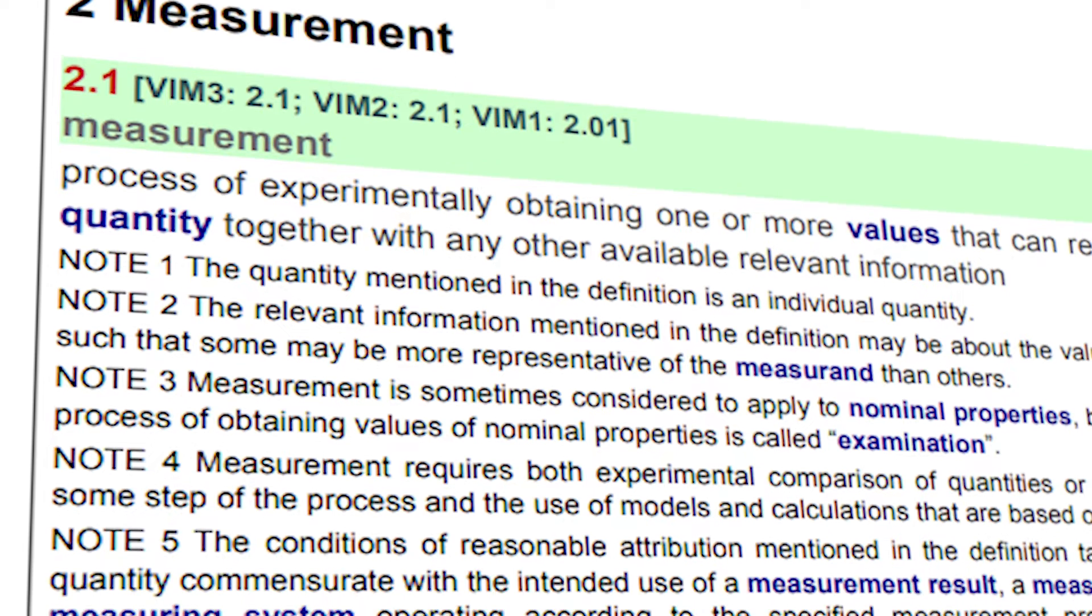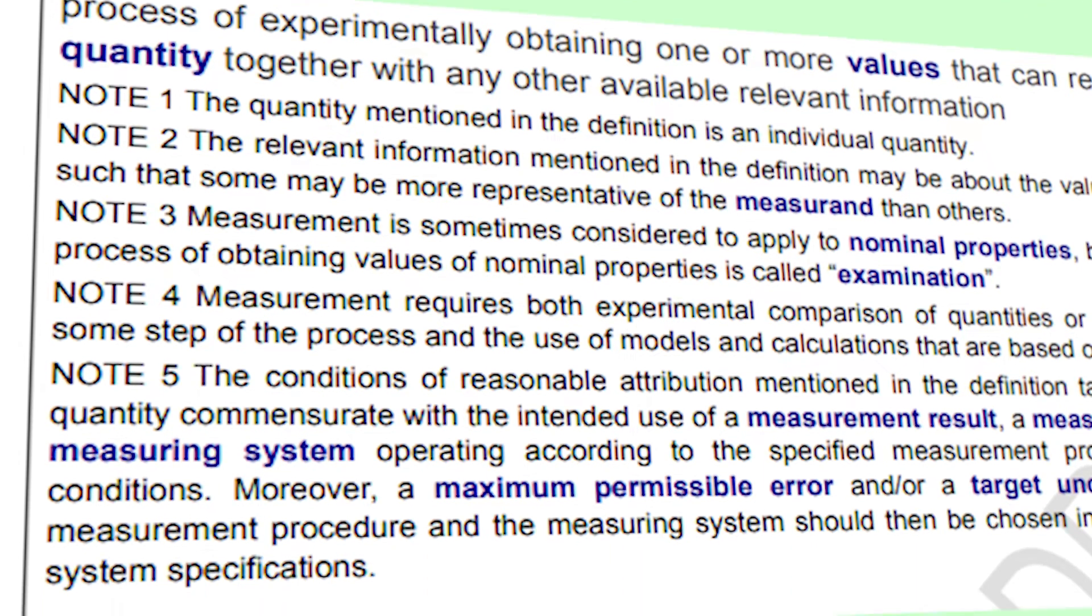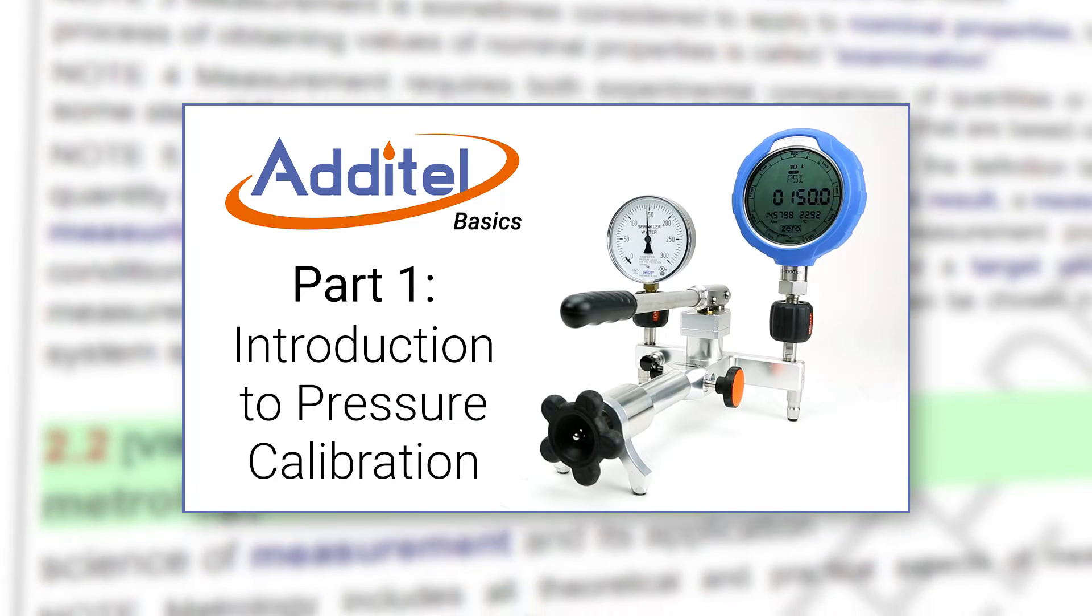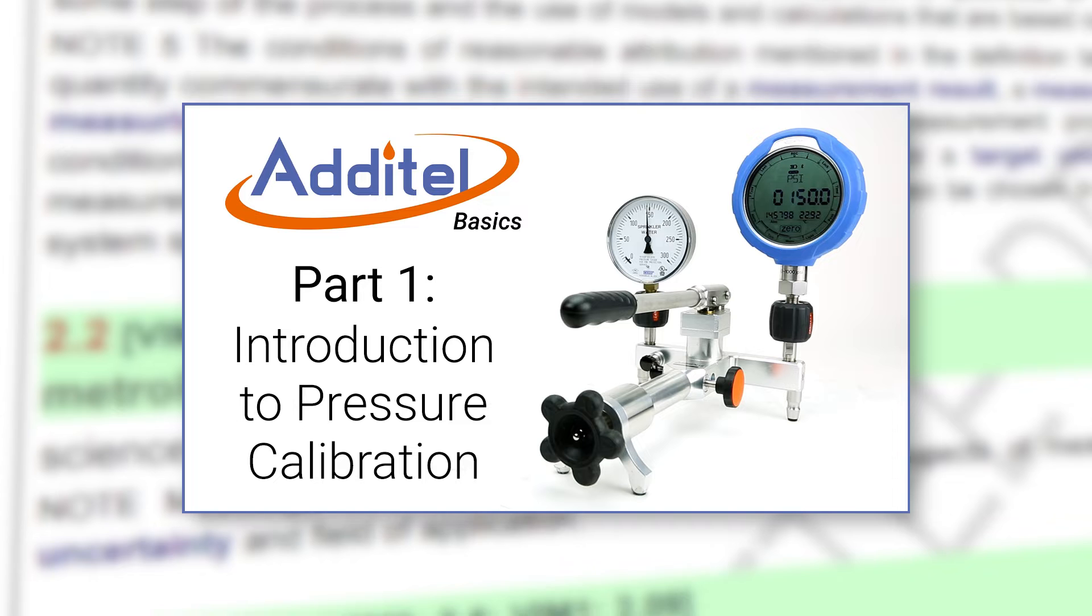All of these terms can be found in the International Vocabulary of Metrology 4th Edition, available for free online. If you haven't seen part 1 of this series, we recommend watching that first as it covers the basics of metrology and calibration. Let's get started.